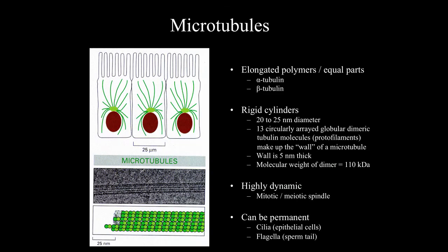Microtubules are elongated polymers consisting of equal molar ratios of alpha tubulin and beta tubulin. They are rigid cylinders approximately 20 to 25 nanometers in diameter, consisting of 13 circularly arranged globular dimeric tubulin molecules called protofilaments, which make up the wall of the microtubule.